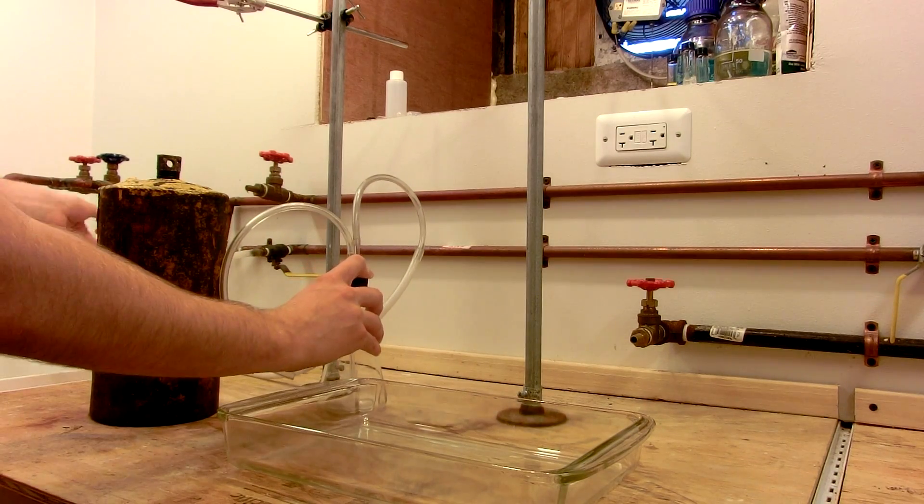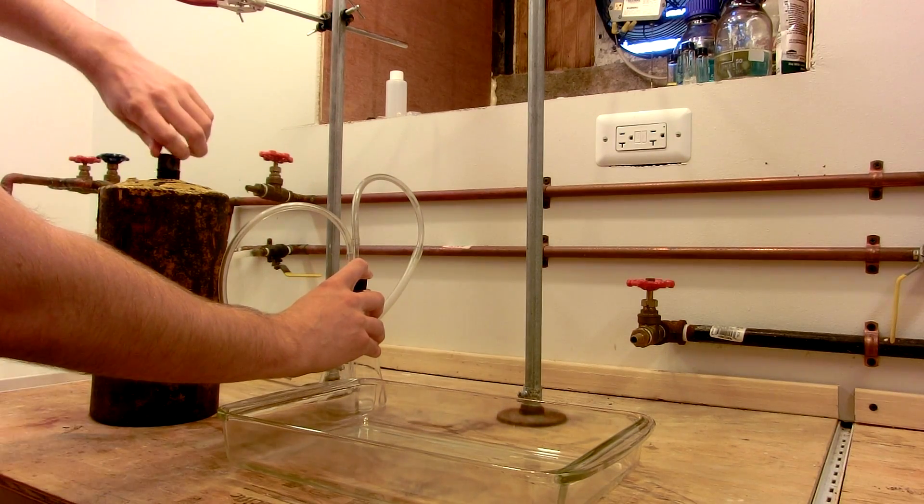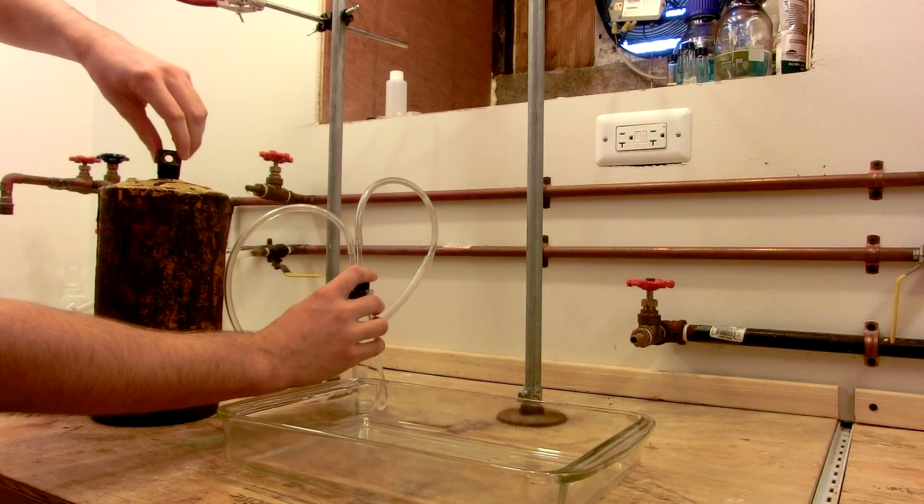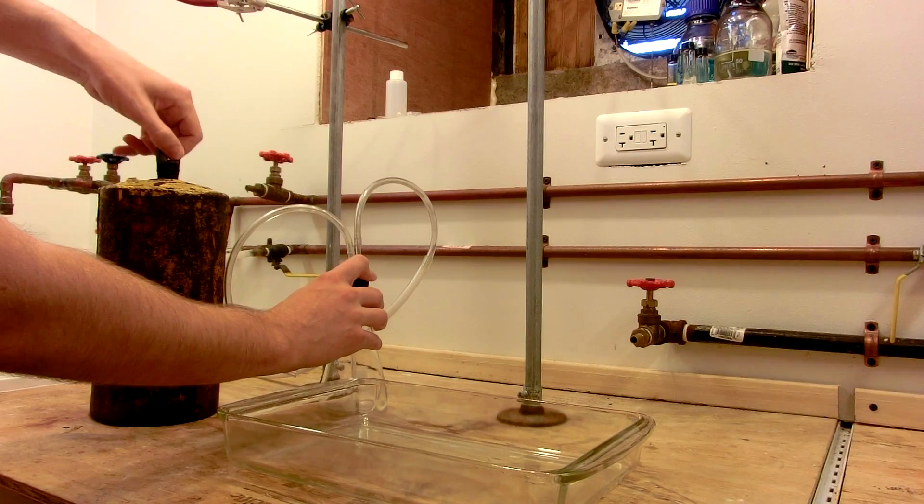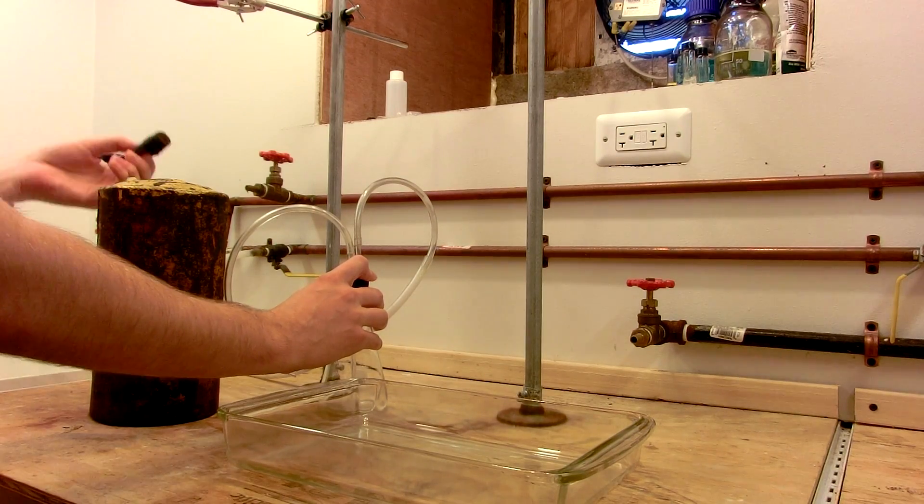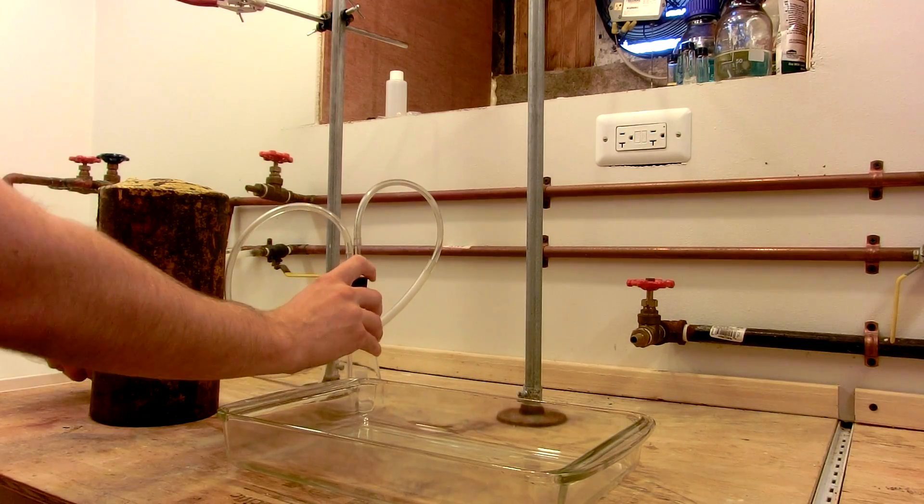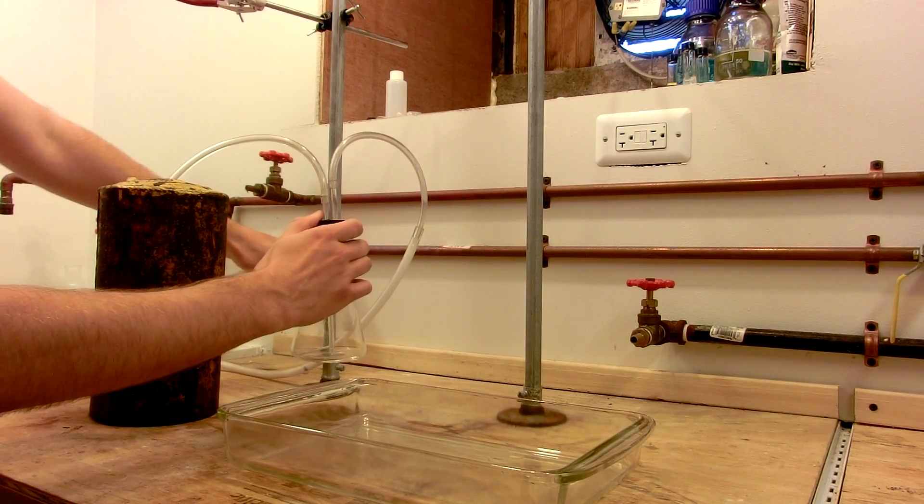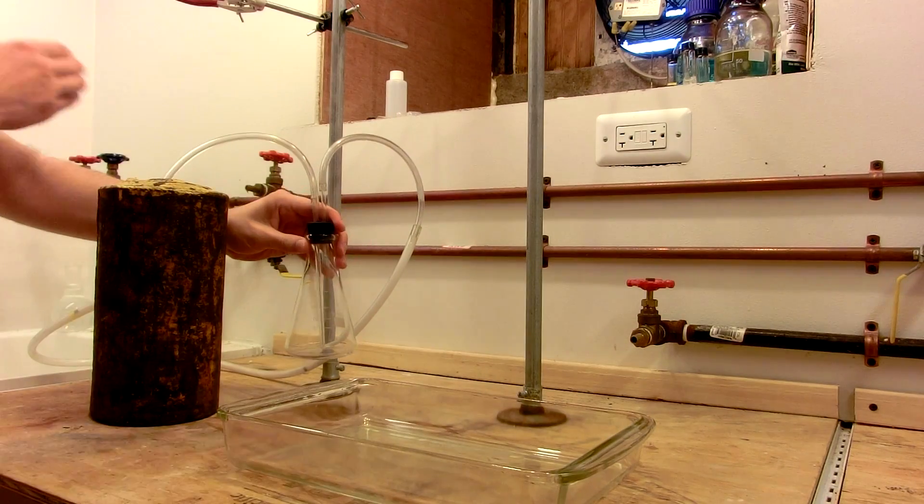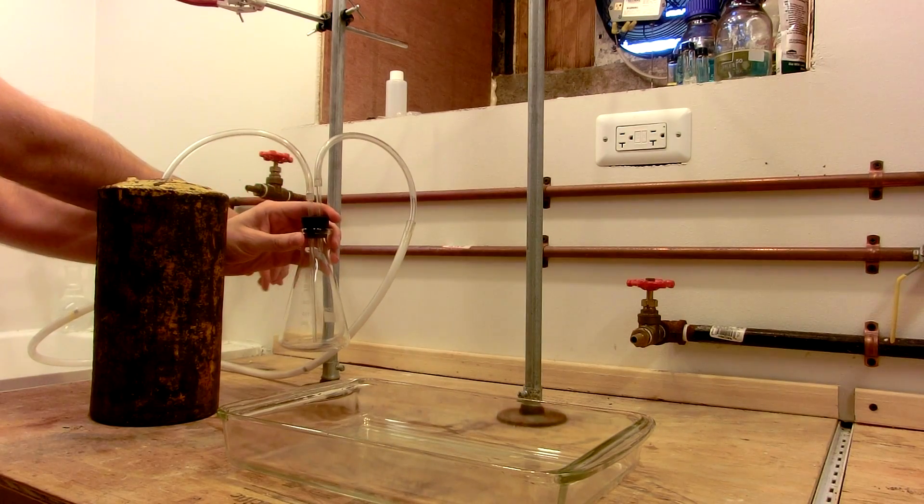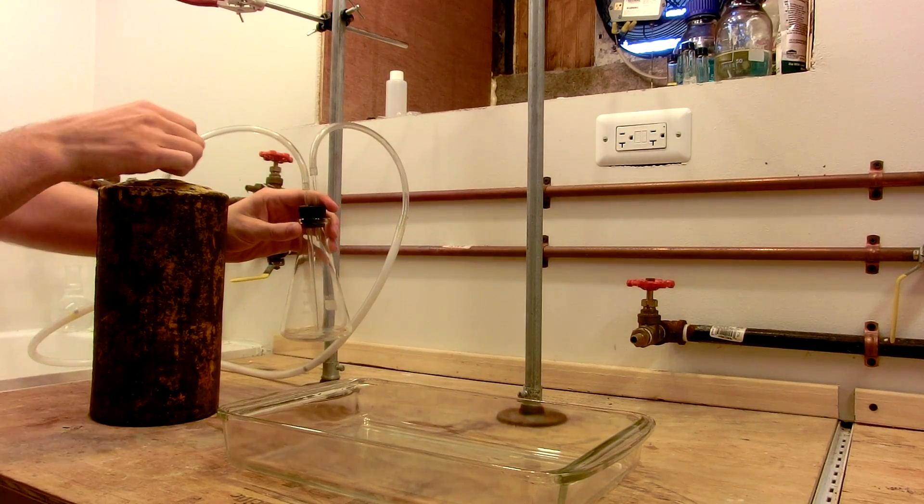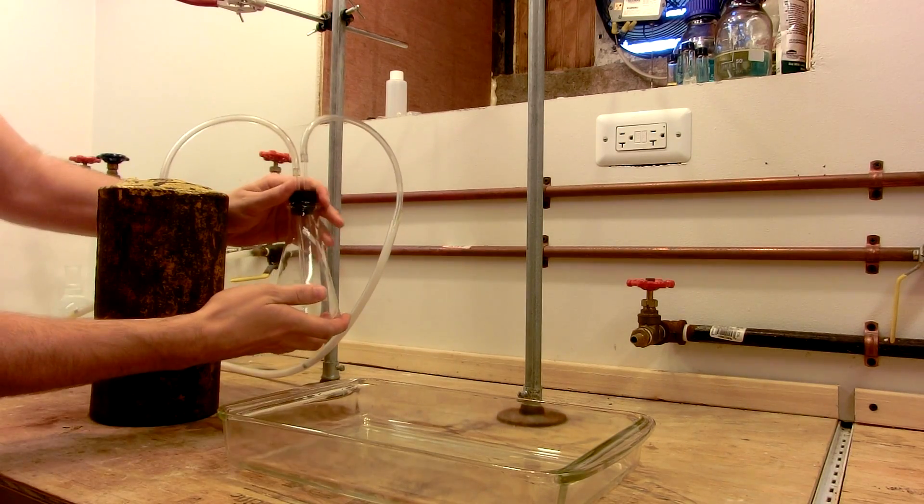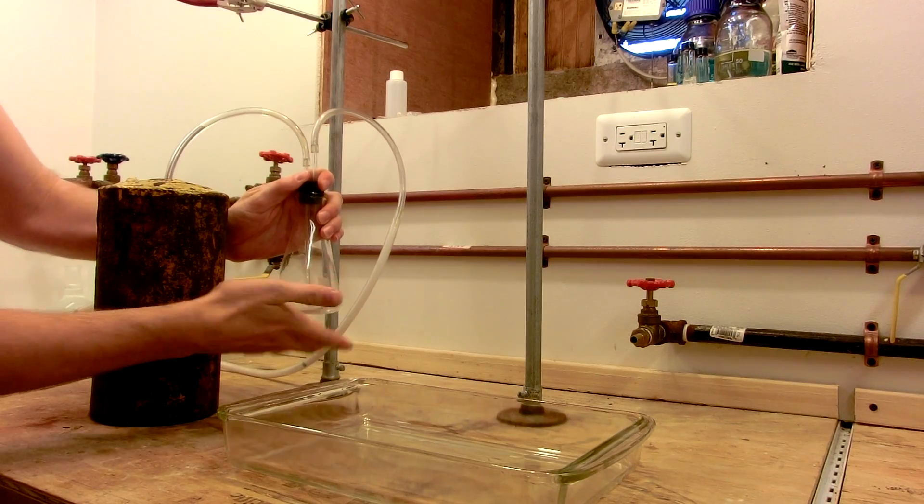The aspirator is on. Open the flask. Always do this in a ventilated room because mercury vapors are no joke. It's a cumulative poison. It's a neurotoxin. You've got to be careful. Now I'll open up the vacuum. With flask, I can get it sealed. Here it comes.